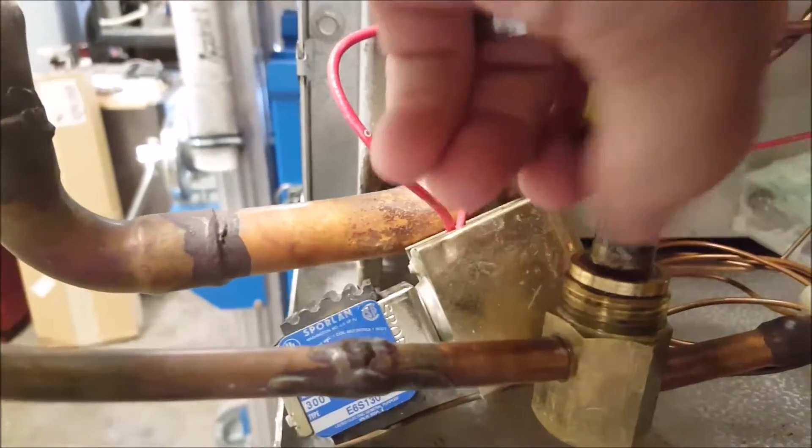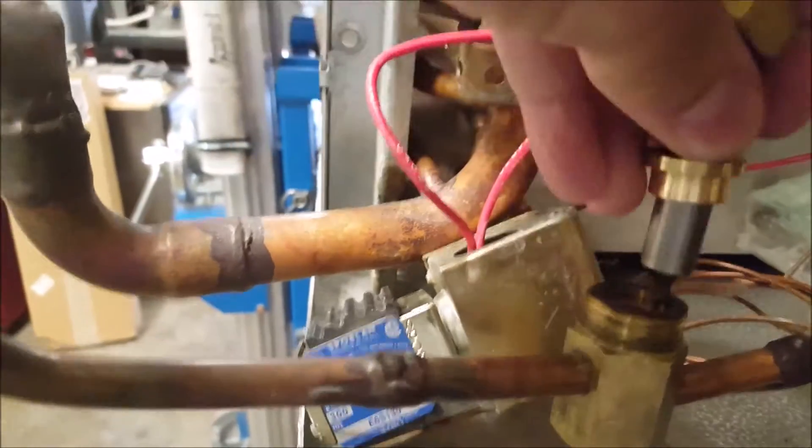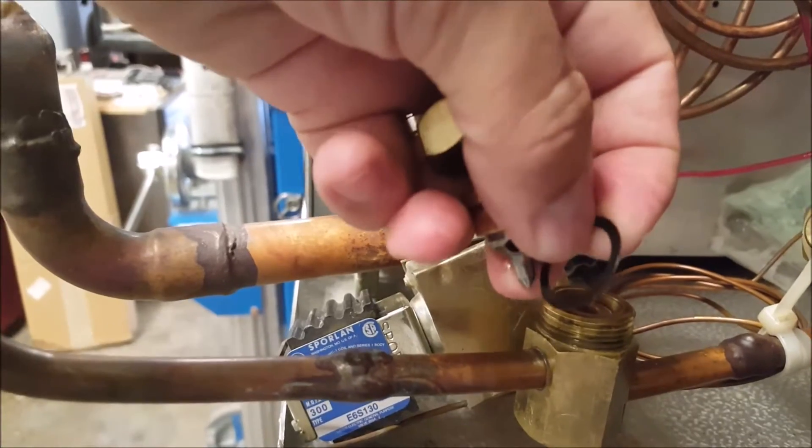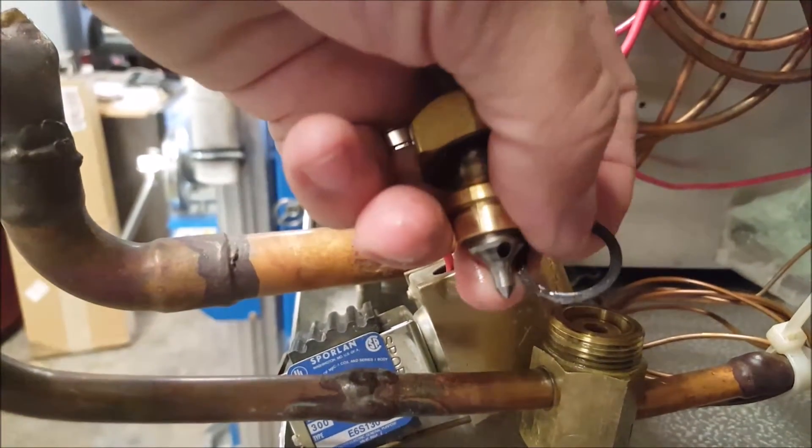When you're going to solder this in place, the best thing to do is just take this thing apart. Take your nut off of there and pull your stem out of here and all your guts. Just don't lose it all. There's a gasket that you could potentially melt if you were to solder it with this thing still in it.